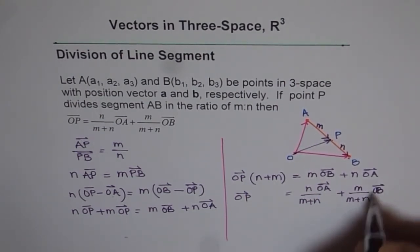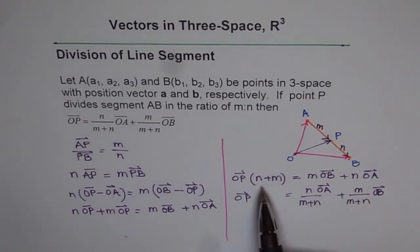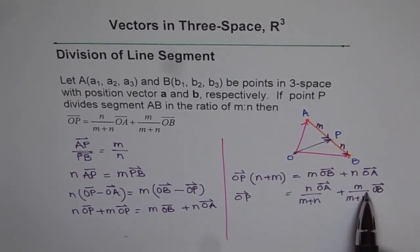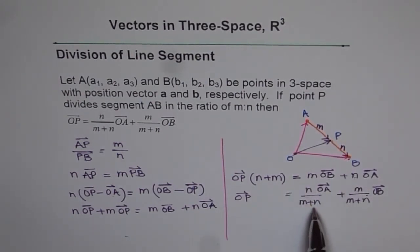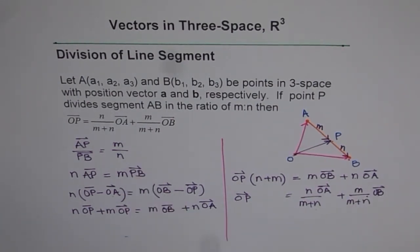Do you see that? What we did, we just rearranged it. So basically, divide both sides by N plus M. So we get M over N plus M OB. We wrote it on this side. N over M plus N OA. To write the expression as required.